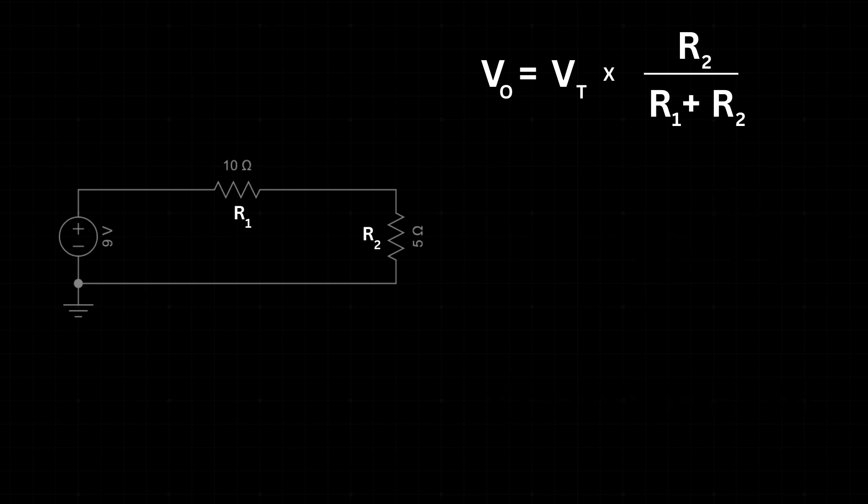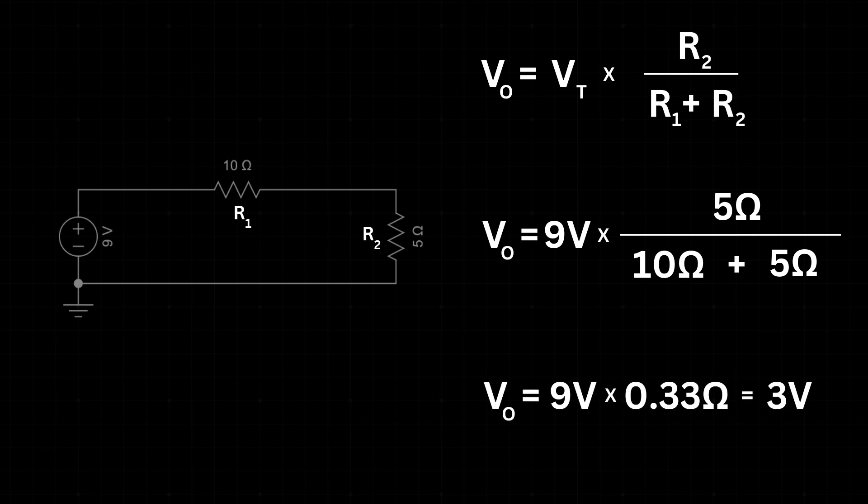Now let's do the same formula to calculate the output voltage of R2. The total voltage is 9 volts. R2 is 5 ohms. The total resistance is the same 15 ohms. The output voltage across R2 is 3 volts.